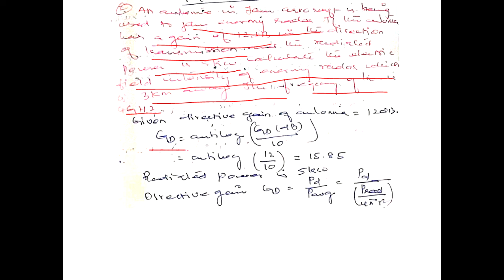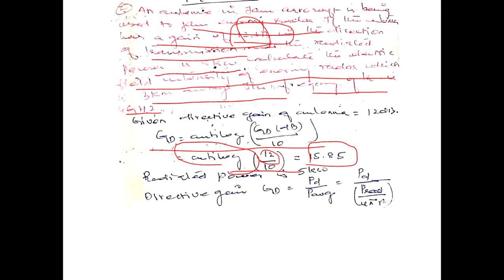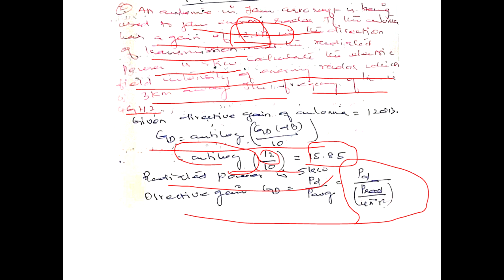You are asked to calculate the electric field intensity. The gain is given as 12 dB. Since the given data is in terms of dB, you have to convert it to a linear value by taking the antilog — the antilog of 12/10 — because gain in dB means 10 times the log of the quantity. Dividing by 10 and taking the antilog gives 15.85. The radiated power is also given.